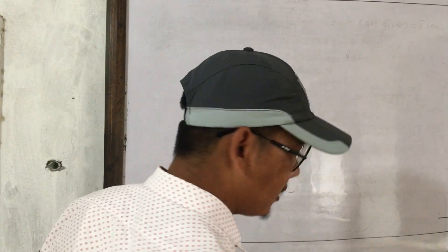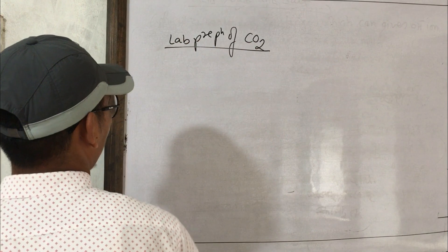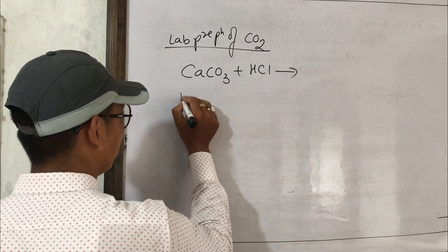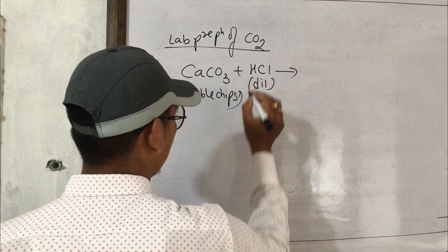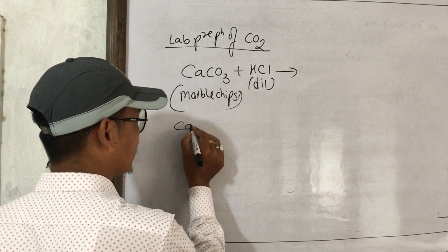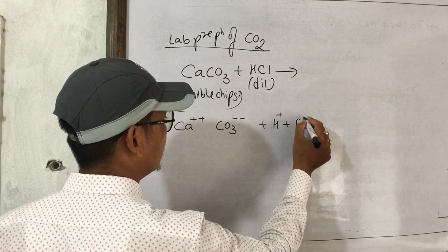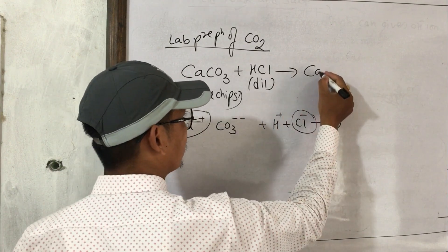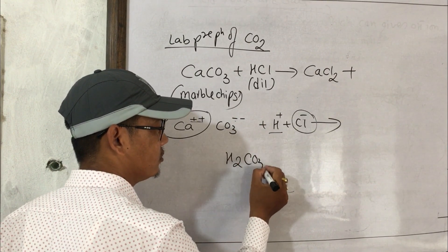To prepare CO2 in the lab, we use calcium carbonate — marble chips. Calcium carbonate reacts with dilute HCl. The reaction: Ca²⁺ + CO₃²⁻ reacts with H⁺ + Cl⁻.